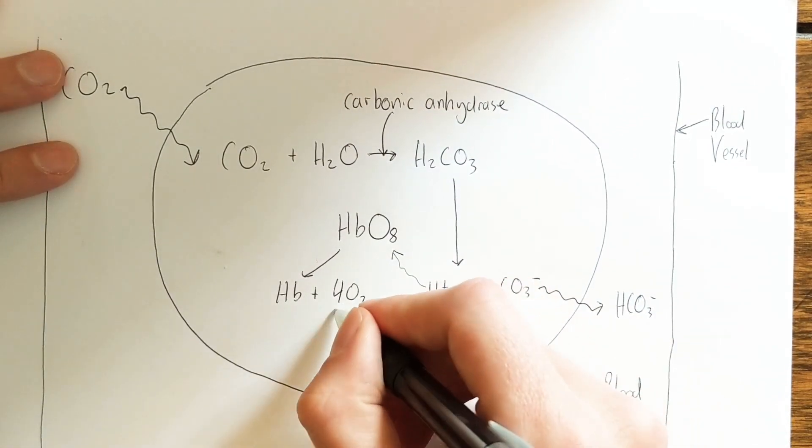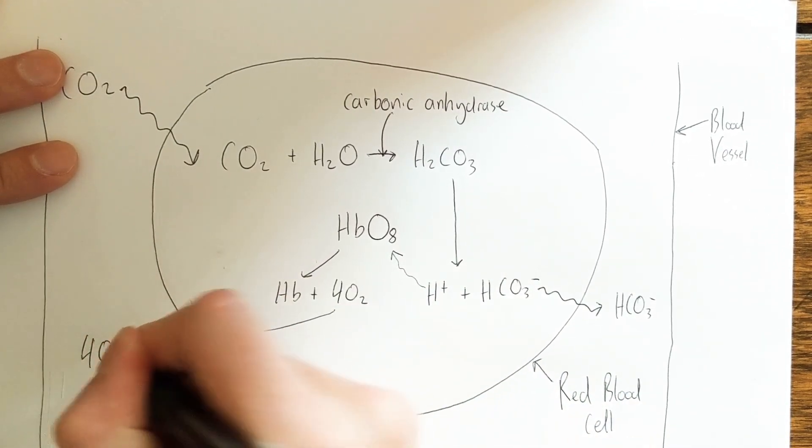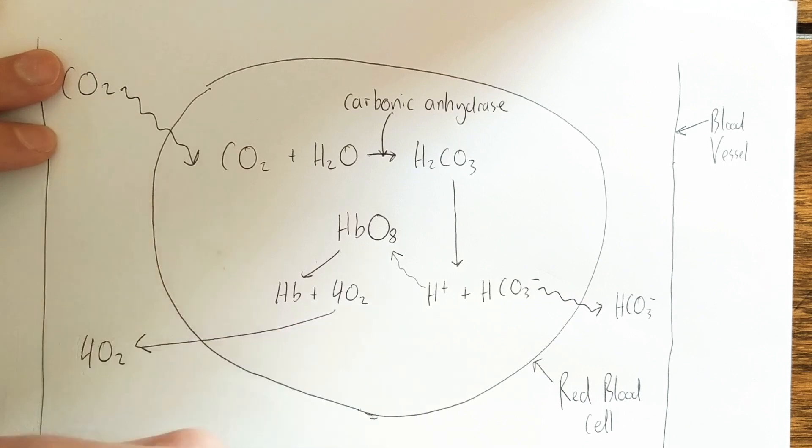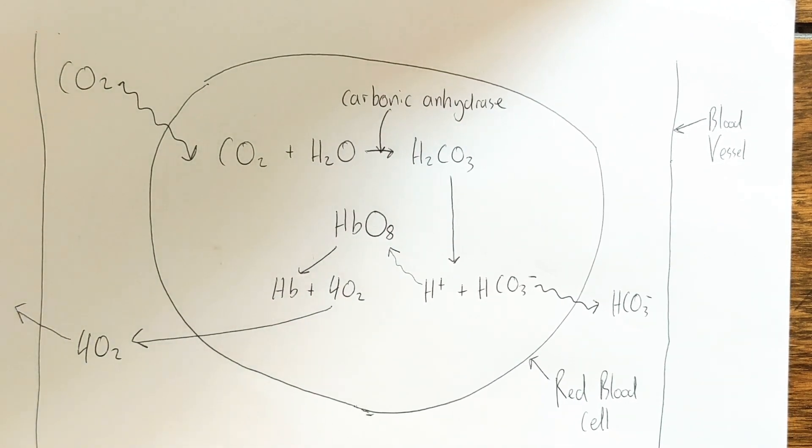Now that oxygen will diffuse out of the red blood cell and then diffuse into respiring cells and tissues which will be surrounding this blood vessel. So that process explains how carbon dioxide is carried in the bloodstream.